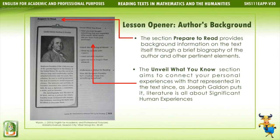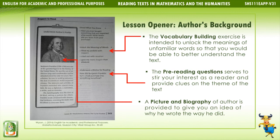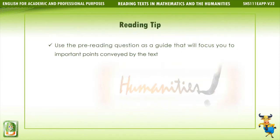Lesson opener — author's background: The section 'Prepare to Read' provides background information on the text itself through a brief biography of the author and other pertinent elements. The 'Unveil What You Know' section aims to connect your personal experiences with that represented in the text, since — as Joseph Galdon puts it — literature is all about significant human experiences. The vocabulary building exercise is intended to unlock the meanings of unfamiliar words so that you would be able to better understand the text. The pre-reading question serves to stir your interest as a reader and provide clues on the theme of the text. A picture and biography of the author is provided to give you an idea of why he wrote the way he did.